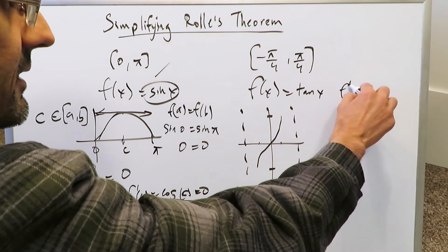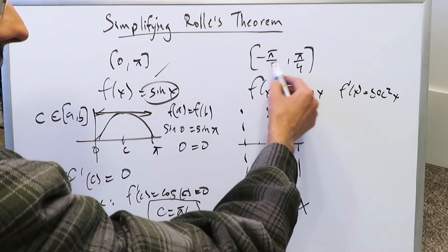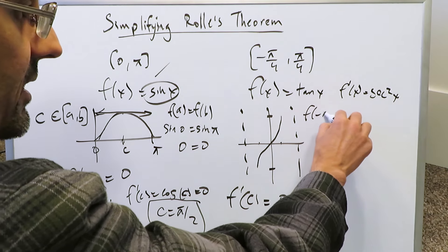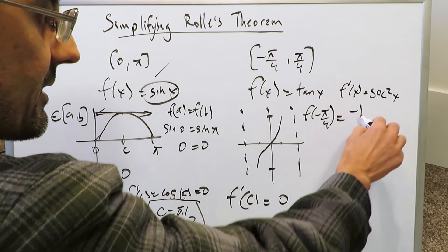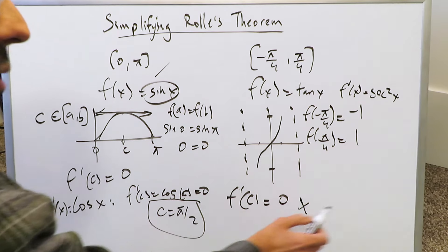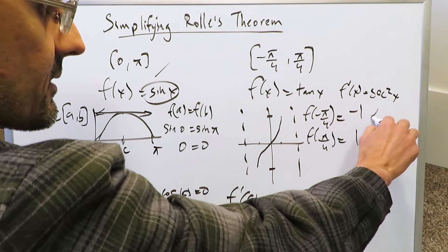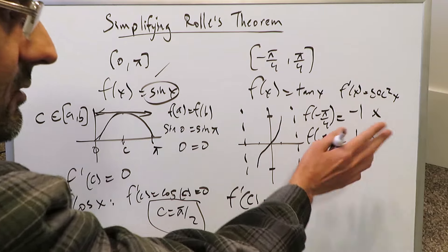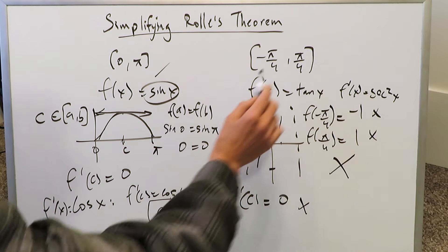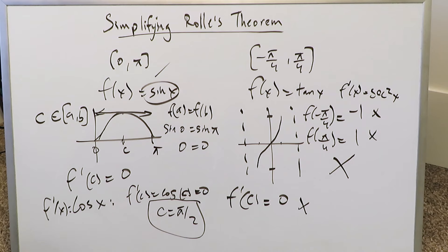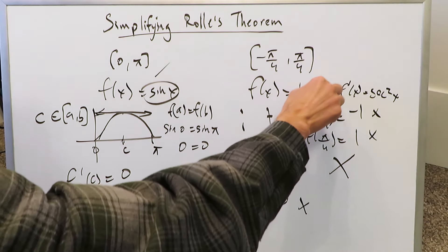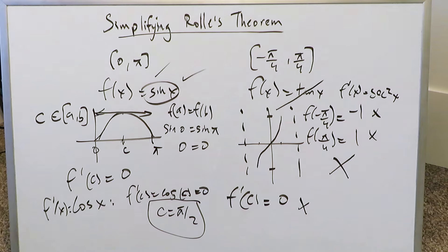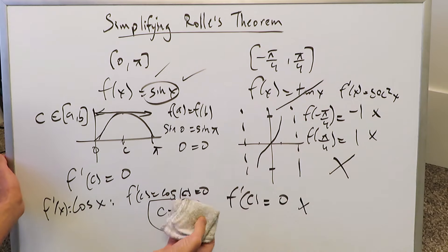For tan(x) on [−π/4, π/4], the derivative is sec²(x). But f(−π/4) = tan(−π/4) = −1 and f(π/4) = tan(π/4) = 1. These are not equal, so the condition f(a) = f(b) is not satisfied. You cannot proceed to find f'(c) = 0. There is no point in this interval where you can demonstrate a horizontal tangent line, so this function fails Rolle's Theorem here.